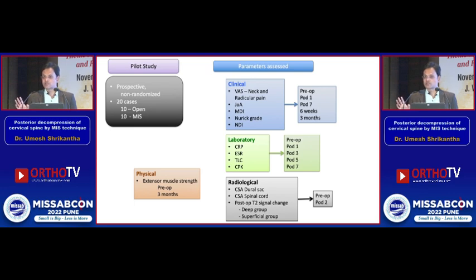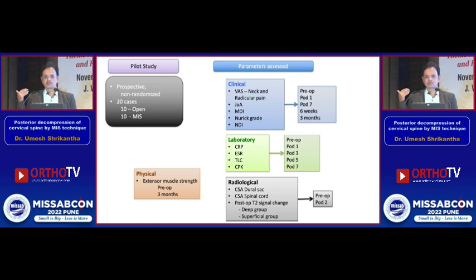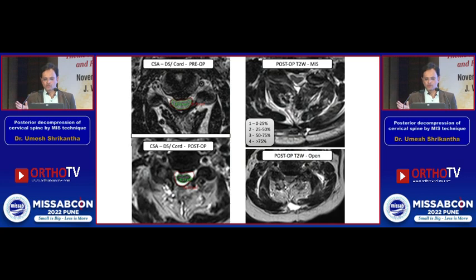We measured laboratory parameters — CRP, ESR, TLC, and CPK — at pre-op and post-op days one, three, five, and seven. Radiologically, we assessed the cross-sectional area of the dural sac and the spinal cord independently on pre- and post-operative MRI, along with post-operative T2 signal change in both the deep and superficial muscle groups. A physiotherapist assessed extensor muscle strength and its improvement after post-operative physiotherapy.